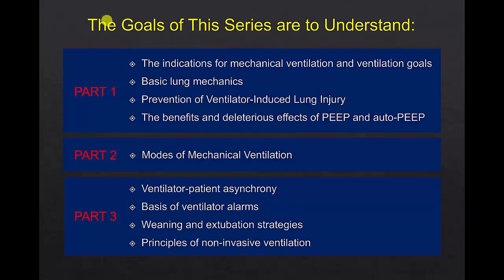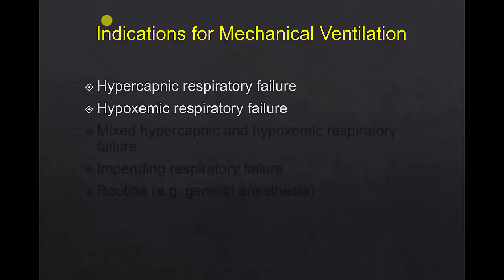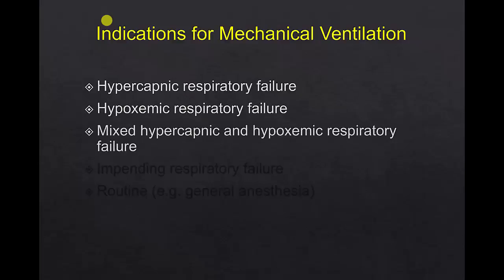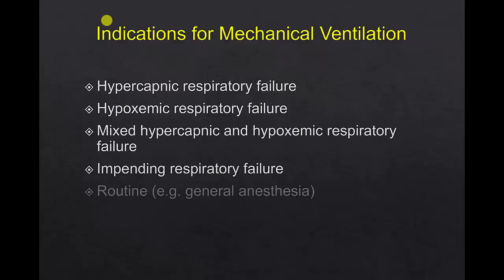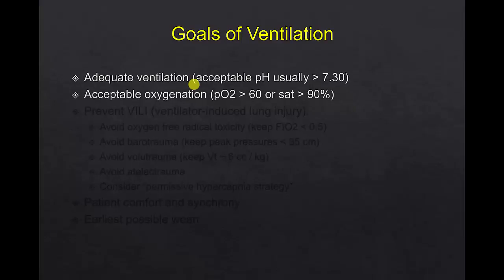Indications for mechanical ventilation include hypercapnic respiratory failure, hypoxemic respiratory failure, mixed hypercapnic and hypoxemic respiratory failure, impending respiratory failure, and routine use of mechanical ventilation such as general anesthesia cases. Goals of ventilation include achieving adequate ventilation with a pH over 7.3 and acceptable oxygenation with a PO2 over 60 or saturations over 90 percent.